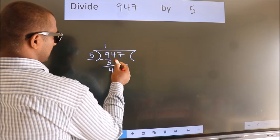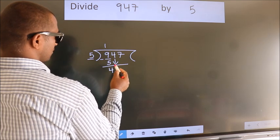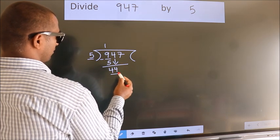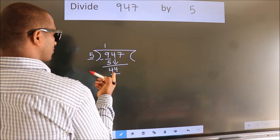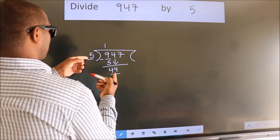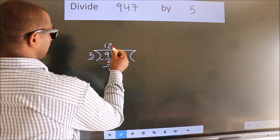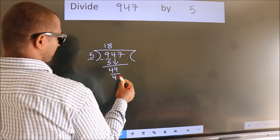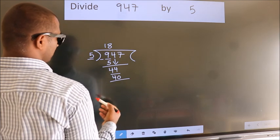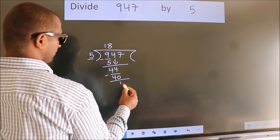After this, bring down the beside number. So 4 down. So 44. A number close to 44 in 5 table is 5 8s 40. Now we subtract. We get 4.